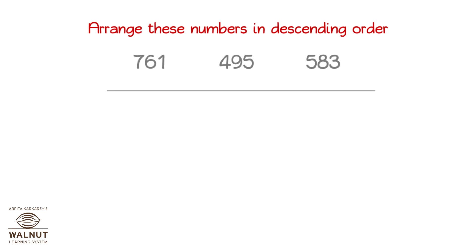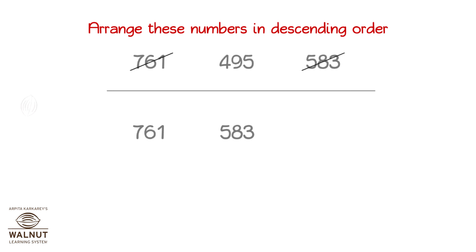Arrange these numbers in descending order. You pick the biggest number and place it first. Then the next biggest and then the last one. So, we get the numbers in descending order.